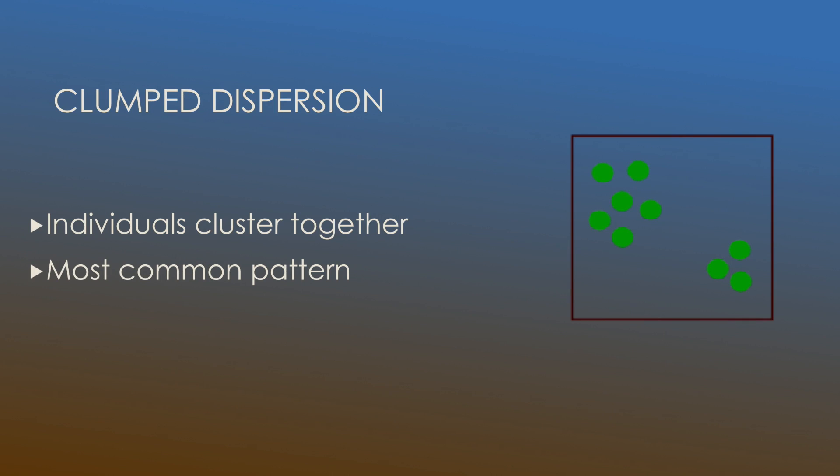Clump dispersion occurs when individuals cluster together. This is the most common pattern of dispersion and there's a lot of examples of it. As you can see on the diagram on the right, individuals are clumped together and they sort of aggregate on top of each other as we're going to see in these pictures.